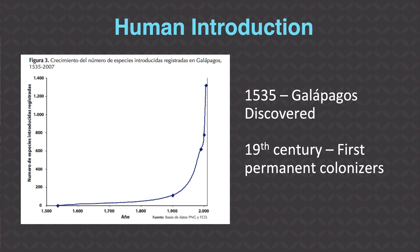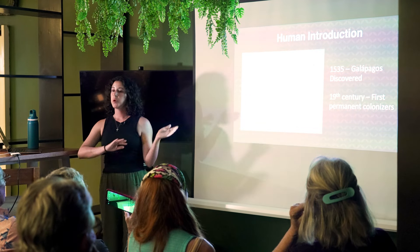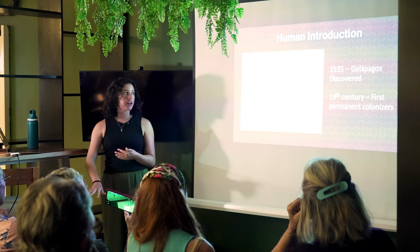Finally, human introduction: the Galapagos were first discovered in 1535, and since that time species of every organism have begun to be introduced into the islands. We especially see a steep incline when permanent settlers began to arrive in the Galapagos, bringing all kinds of species — both plants and animals — with them.